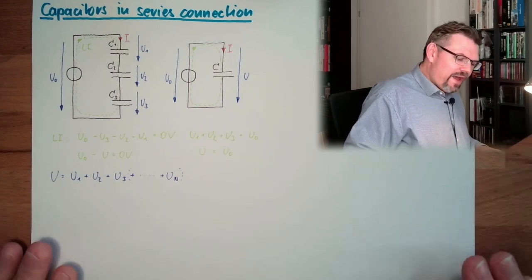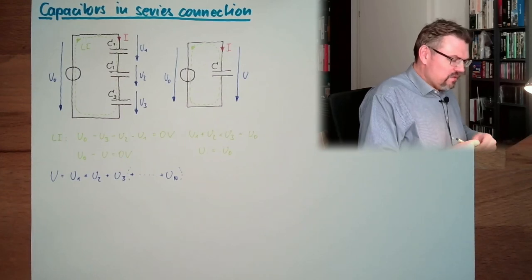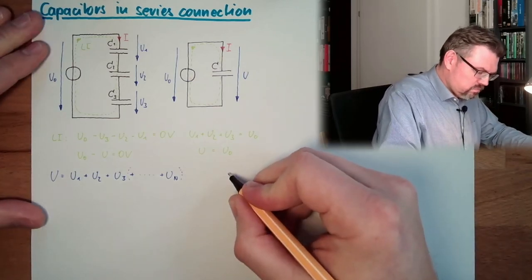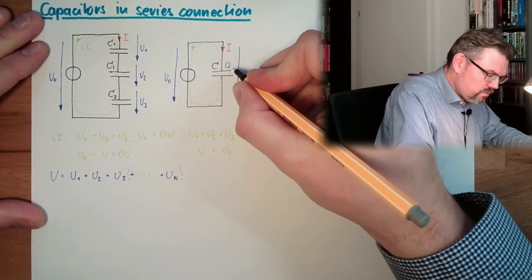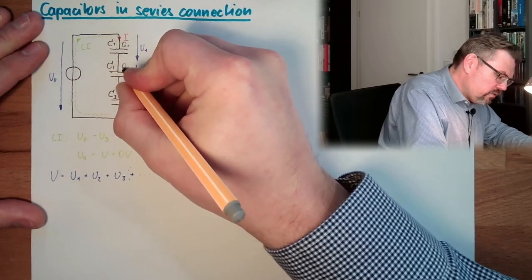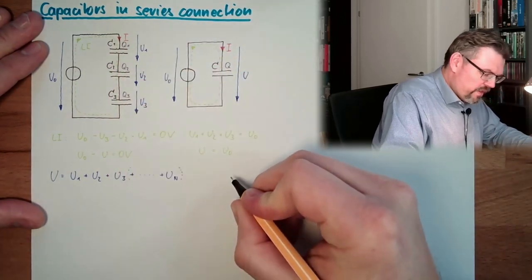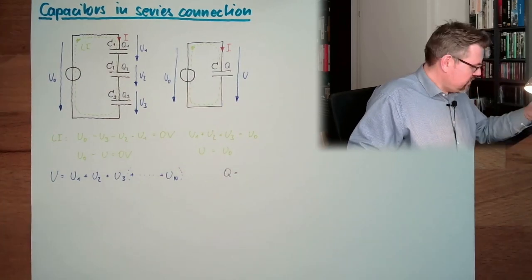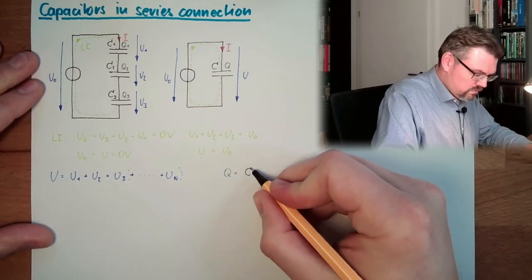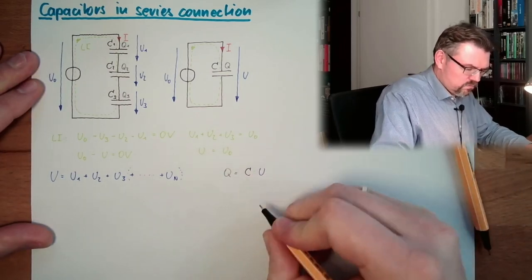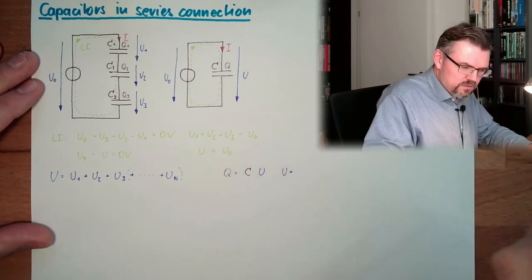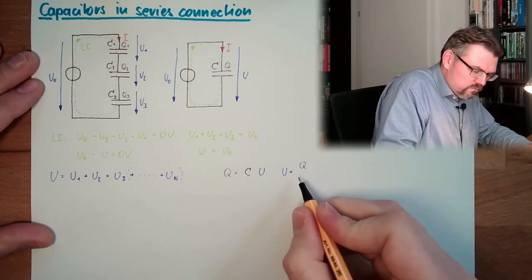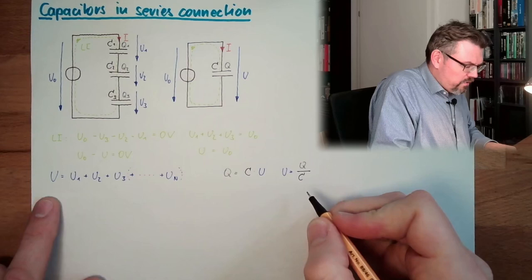And then we know, at the capacitor, that we have the rule that q, here is the charge q. Here this is charge Q1, this is charge Q2, this is charge Q3. And we have the rule q equals c times u. So this means u equals q divided by c.